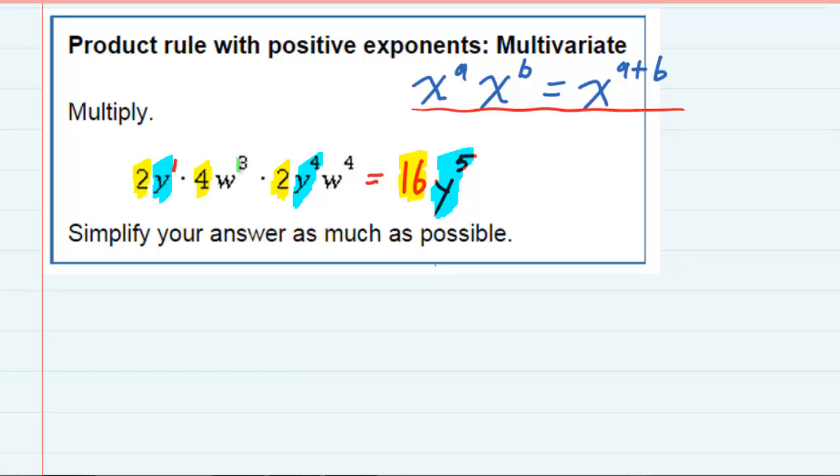And then there are also some w's in here. I've got w3 and w4. I want to multiply those using the same rule. That says I keep the base, w, and I add the exponents. The exponents are 3 and 4, so when I add those, that will give me 7. So my simplified answer will be 16, y5, w7.